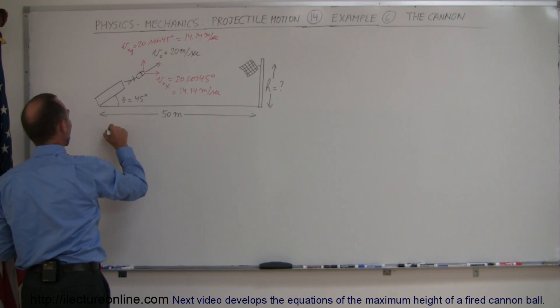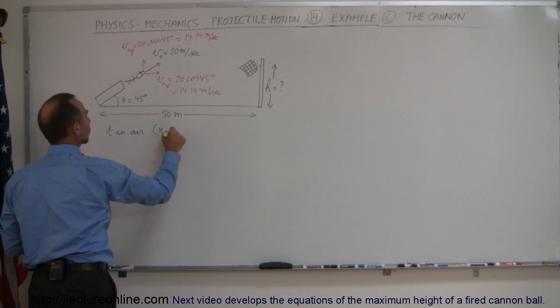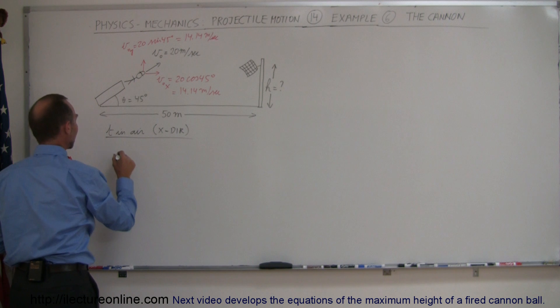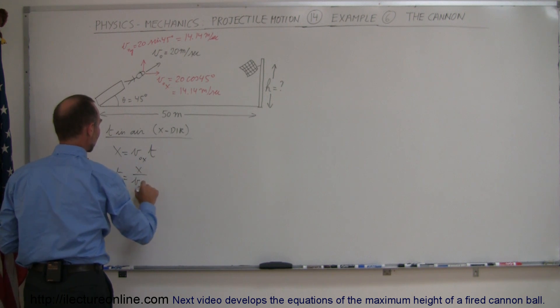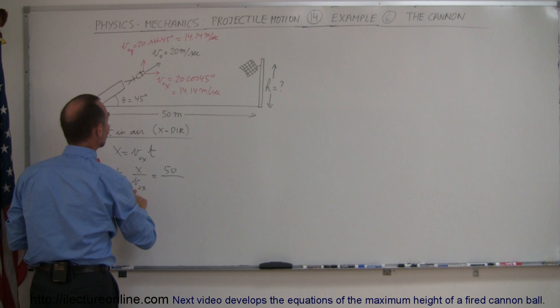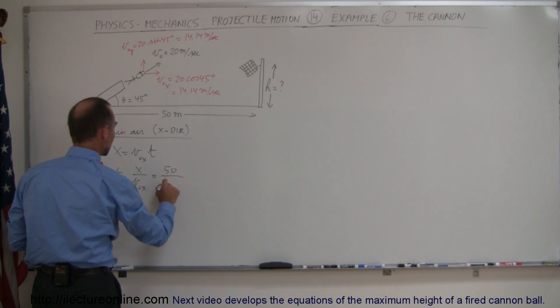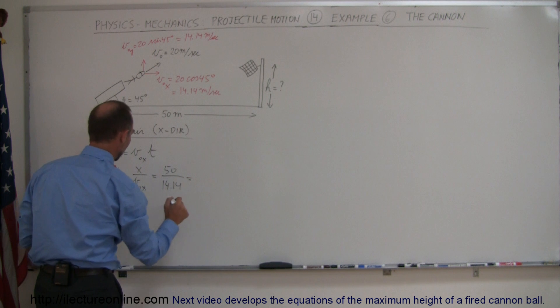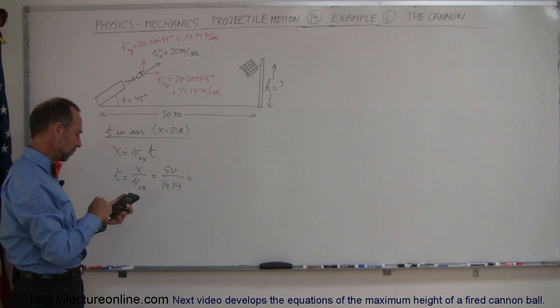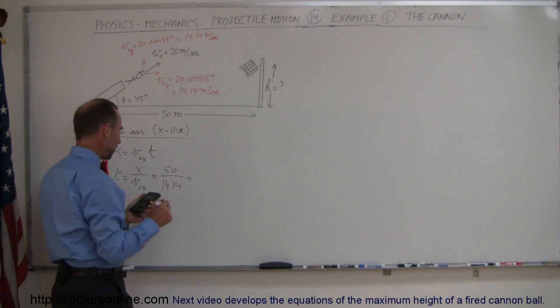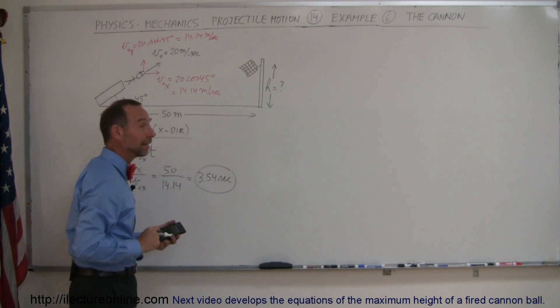So here we can say time in the air, and we're going to use the x direction to do that. So here we can say that x is equal to v initial in the x direction times time, or time is equal to x divided by v initial in the x direction. So the distance is 50 meters, and v initial in the x direction is 14.14 meters. And so there we get 50 divided by 14.14, or 3.54 seconds time in the air.